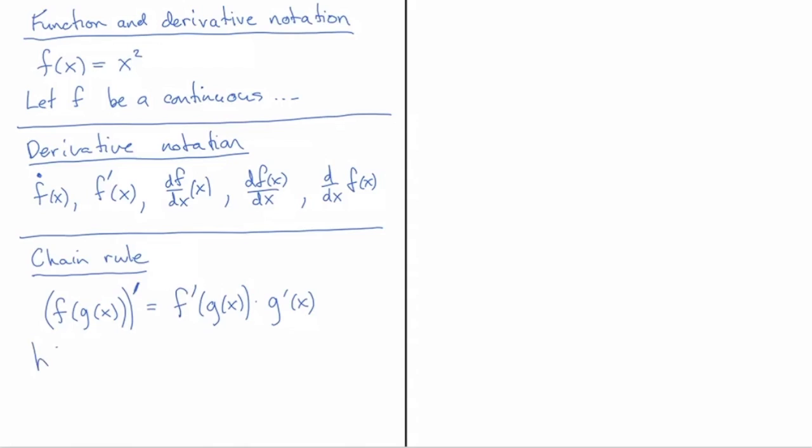Okay so what I would prefer to do here is I would prefer to define a new function h(x) and then define that as the composition so that now when I write down h'(x) it's very clear that I'm taking the derivative of h with respect to its argument the thing immediately in the brackets not the nested one hiding inside.